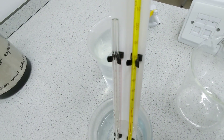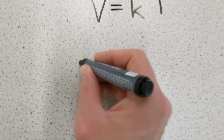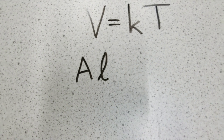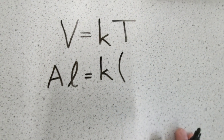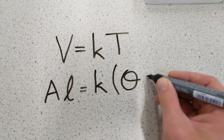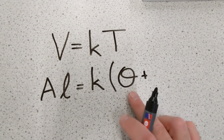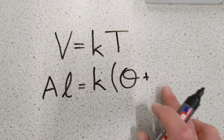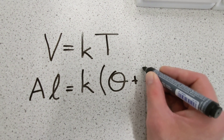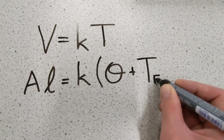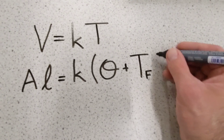I didn't measure volume — I measured the length of the column. But the cross-sectional area of the interior of the capillary is fixed, so volume equals that fixed area A multiplied by the length L. I also didn't measure a Kelvin temperature — I measured a Celsius temperature theta. The Kelvin temperature T equals theta plus T_f, where T_f is the Kelvin temperature equivalent to zero degrees Celsius.